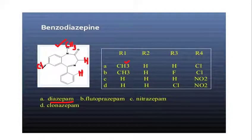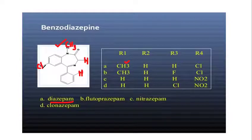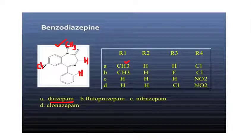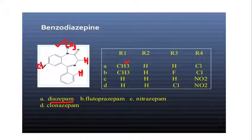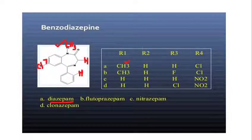At R4 we have an electron-withdrawing group or a halogen, for example chlorine. In diuretics we have also seen chlorine present. Going to the periodic table: fluorine gives a vigorous and hard-to-control reaction, iodine gives a slow reaction. So the most favorable electron-withdrawing group is chlorine, at position 7. This gives us diazepam.